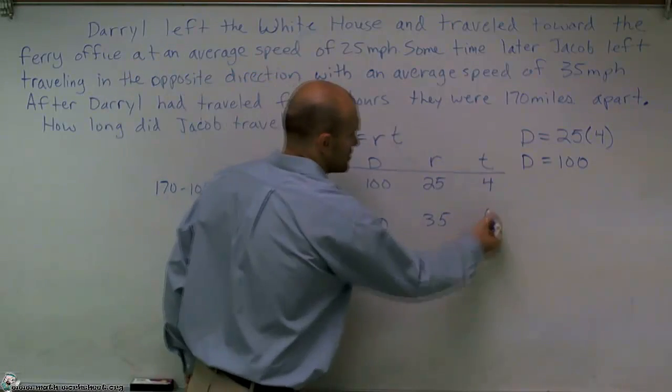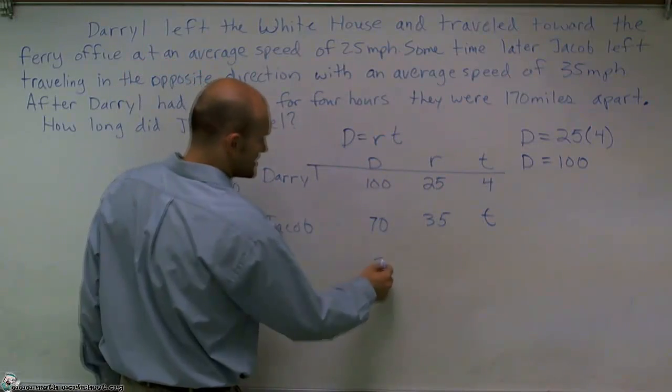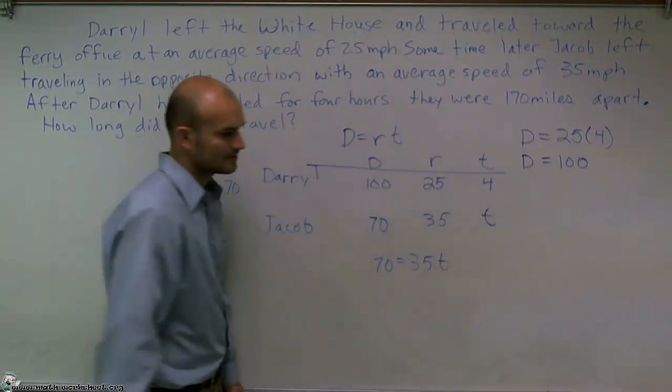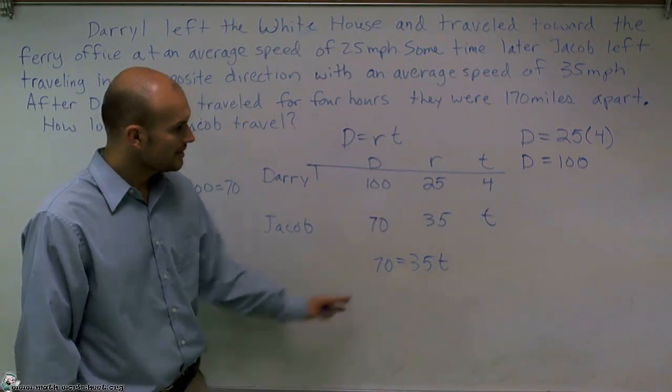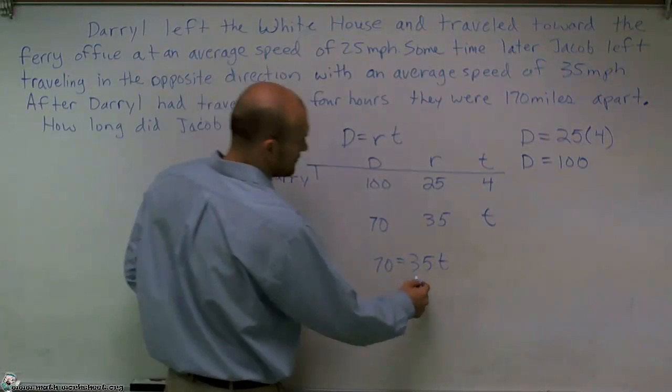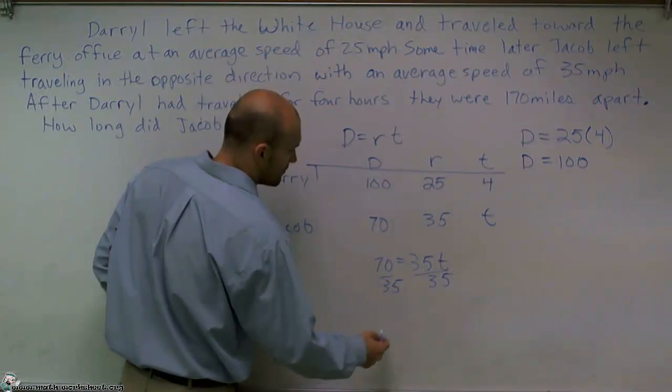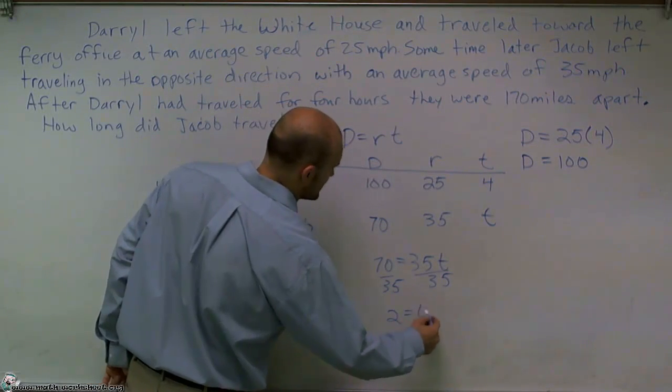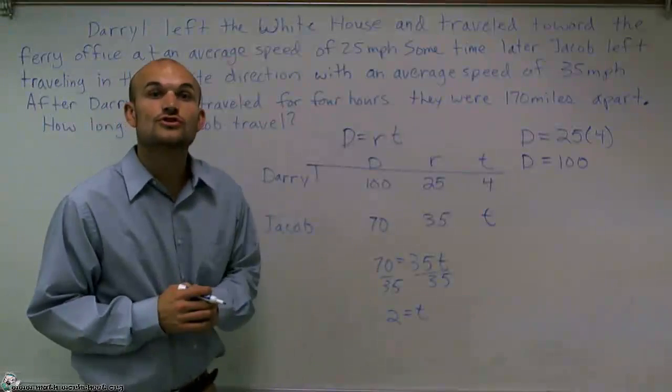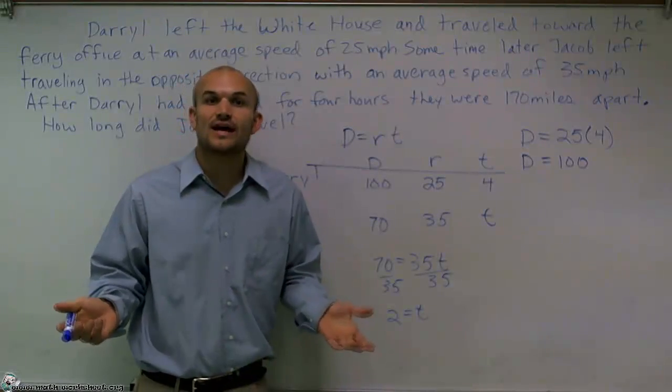We don't know how long Jacob traveled. So I'm going to leave that as T. Now, again, using my equation, I could say 70 equals 35T. Now, to figure out the time that Jacob traveled, I will divide by 35 on both sides. And when I get 2 equals T, that means Jacob traveled for 2 hours. And that is how you solve a basic distance and rate problem.